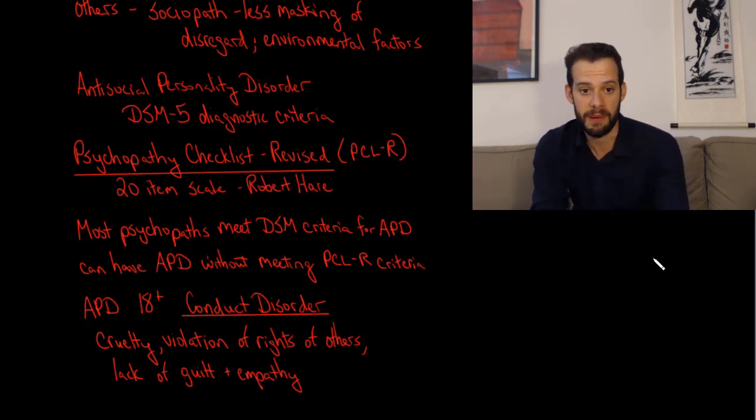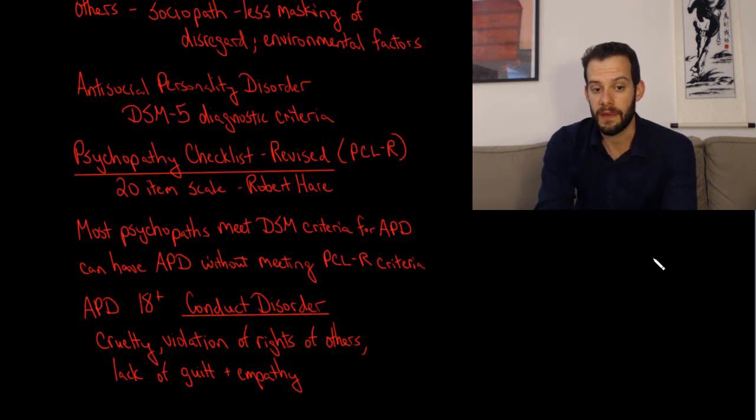And there's some criticism there where people are saying maybe there's not enough research behind this checklist or exactly how it's used, and it's having large effects on people's lives. At the same time, of course, we want to have ways to assess whether people are a greater risk of repeat offending of certain crimes, particularly violent crimes and assaults.